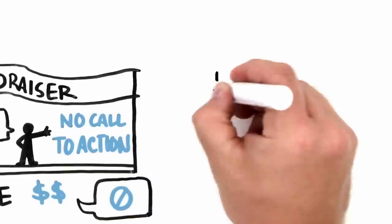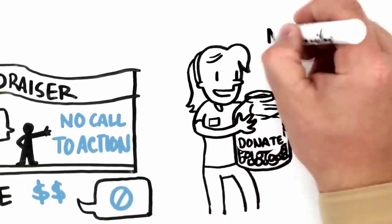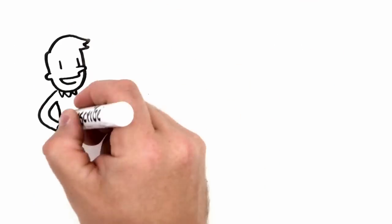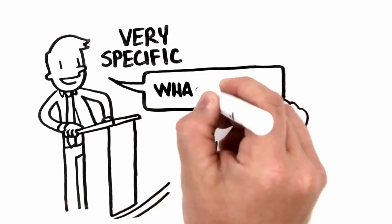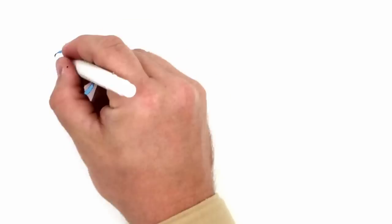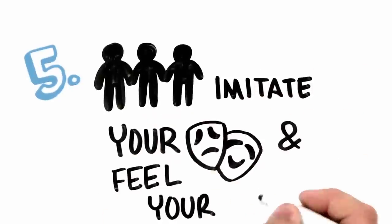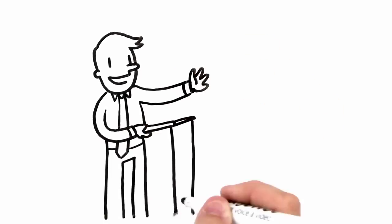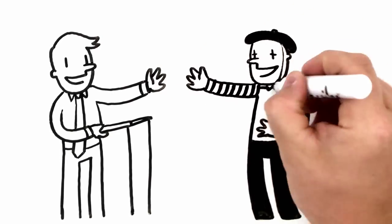...had actually asked for the money. At the end of your presentation, be very specific about exactly what you want your audience to do. Number five: people imitate your emotions and feel your feelings. People imitate what they see. If you are smiling, they tend to smile. If you're energetic, they'll be energetic.